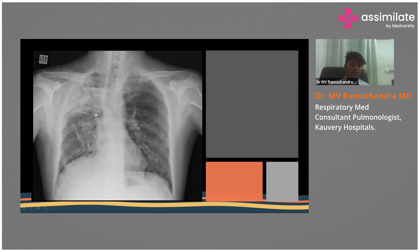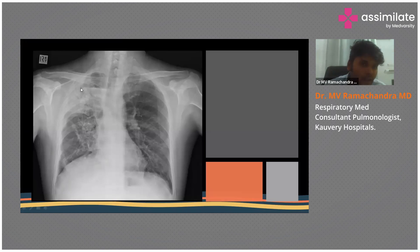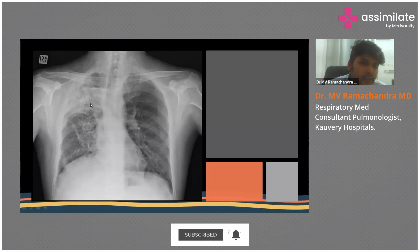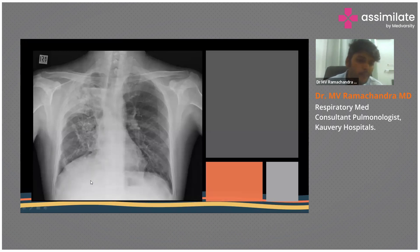In another X-ray, we can see an air-fluid level — this is a case of hydropneumothorax. There is a pneumo component and a hydro component; this straight line is nothing but fluid. Air-fluid levels are noted along with a heterogeneous or homogeneous opacity.